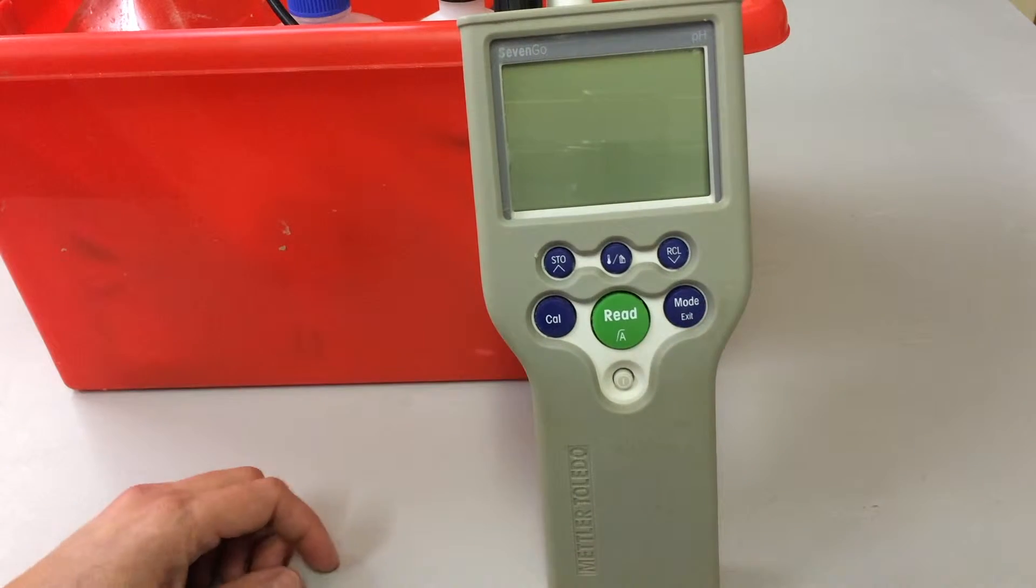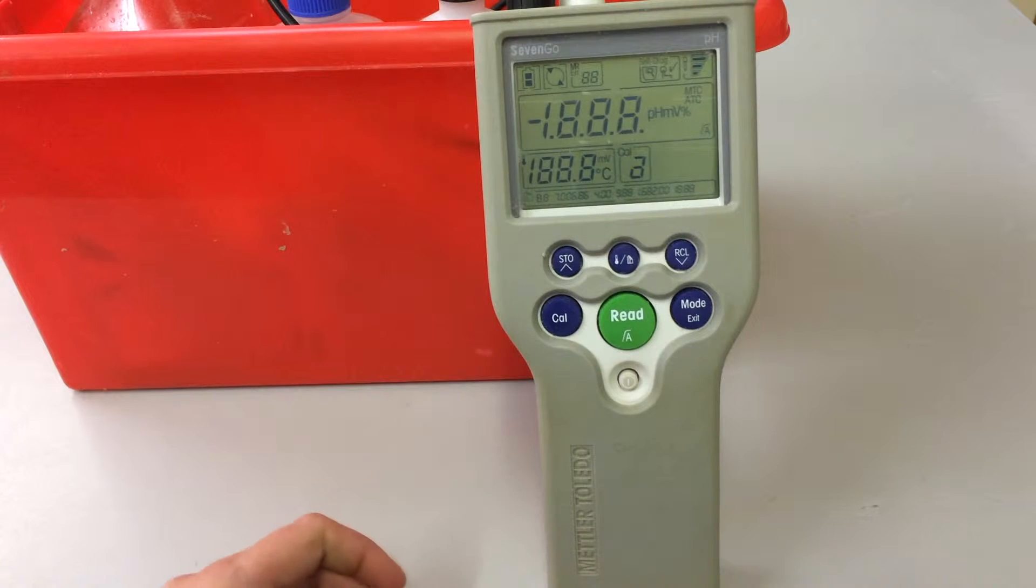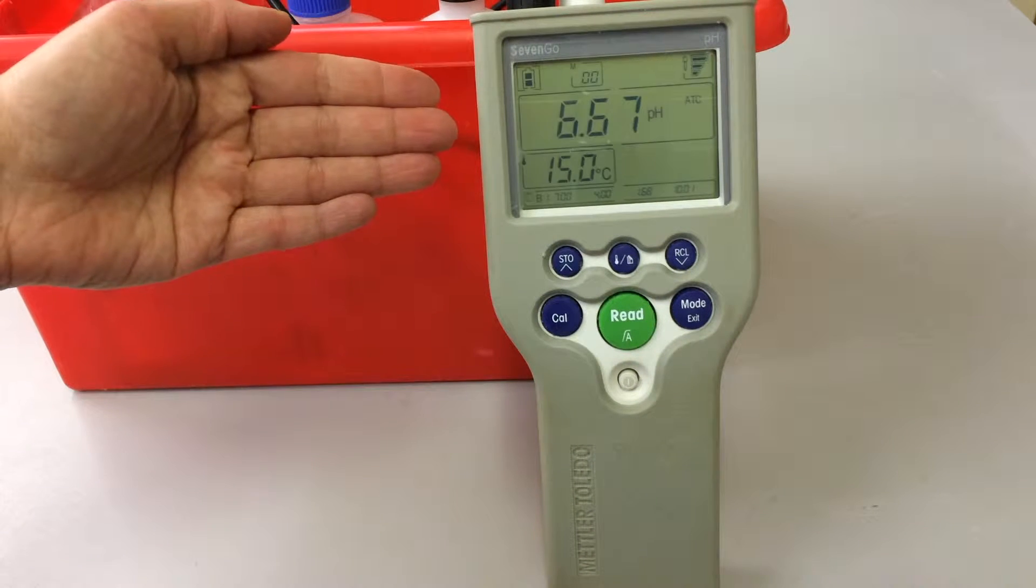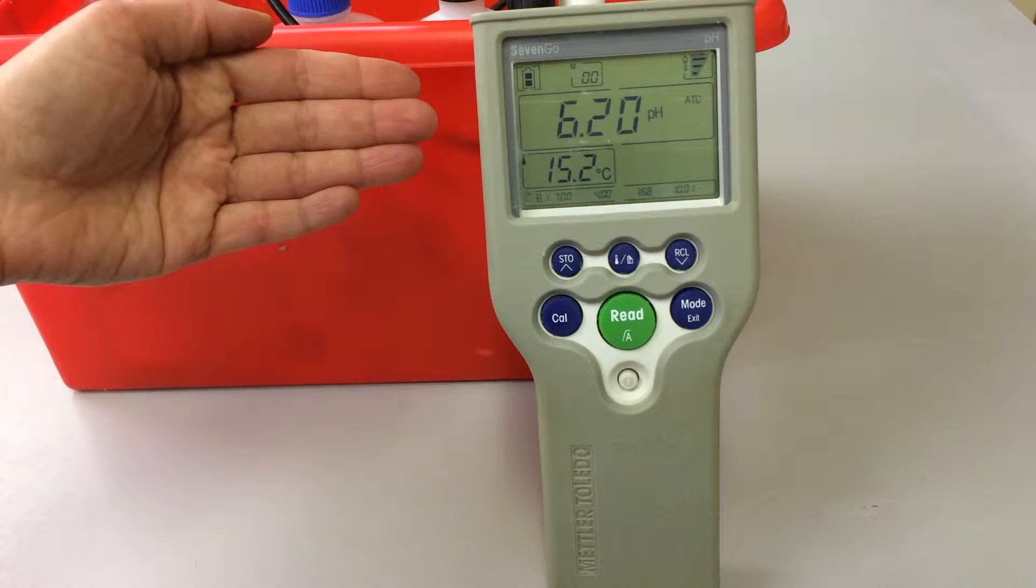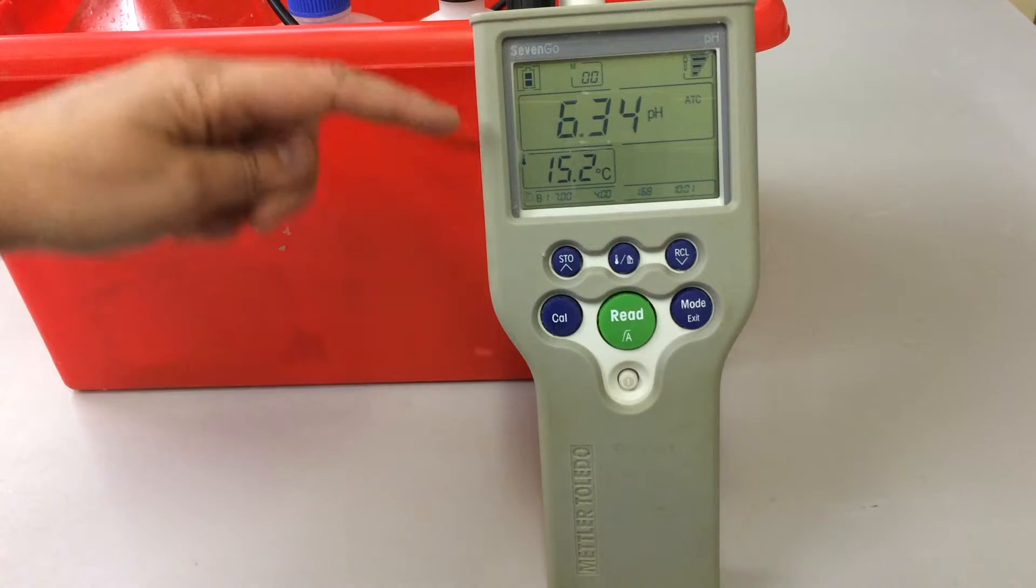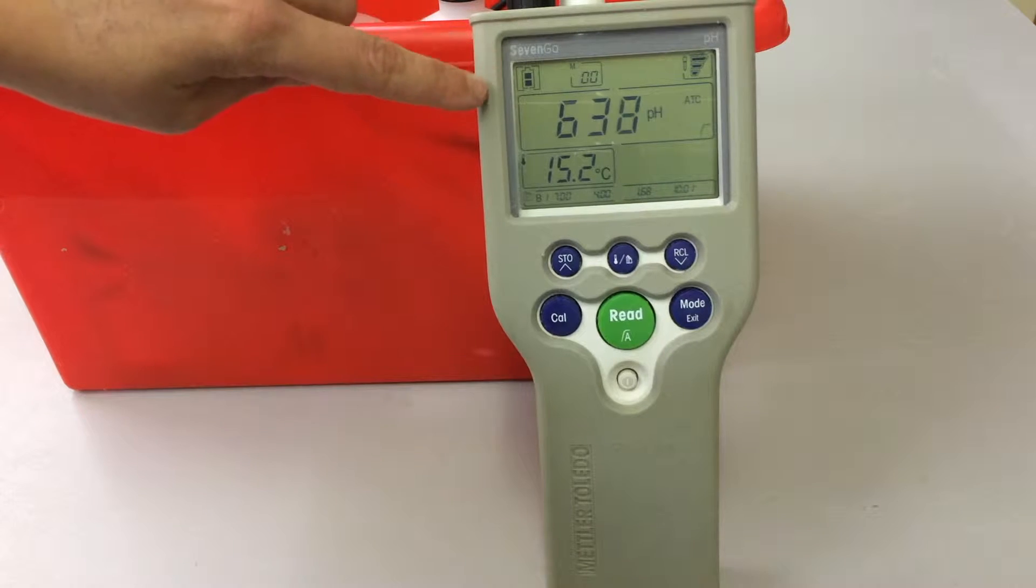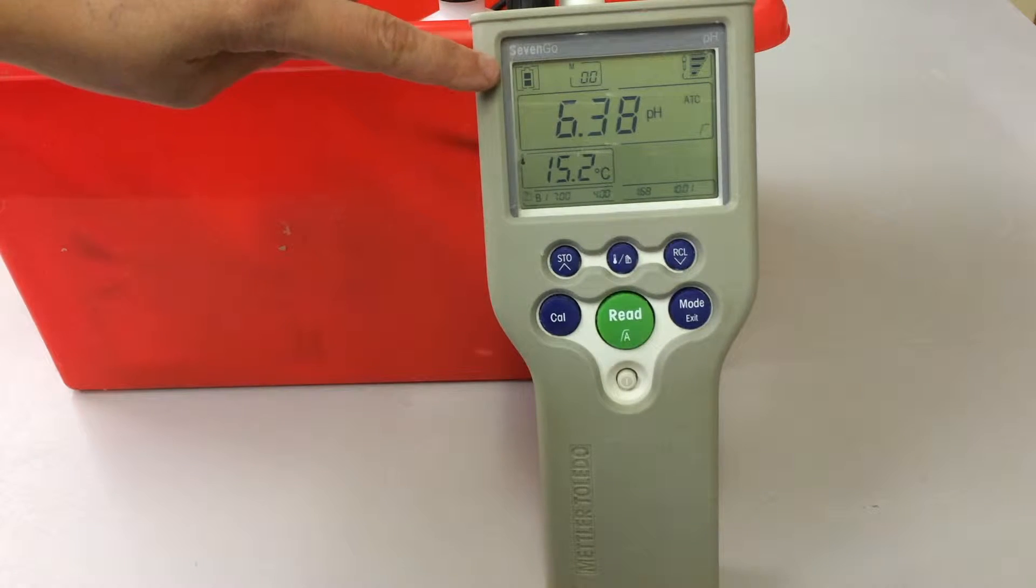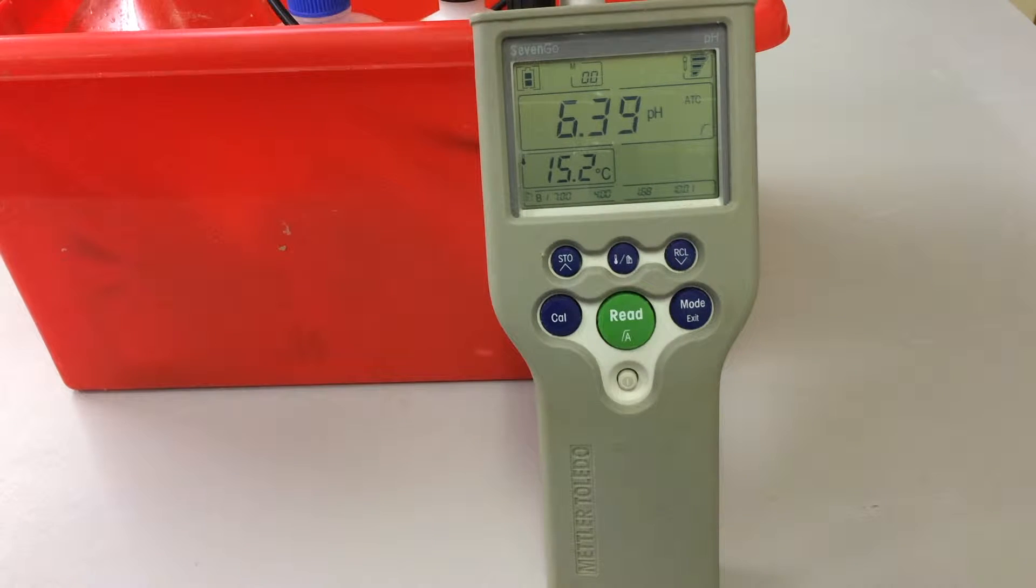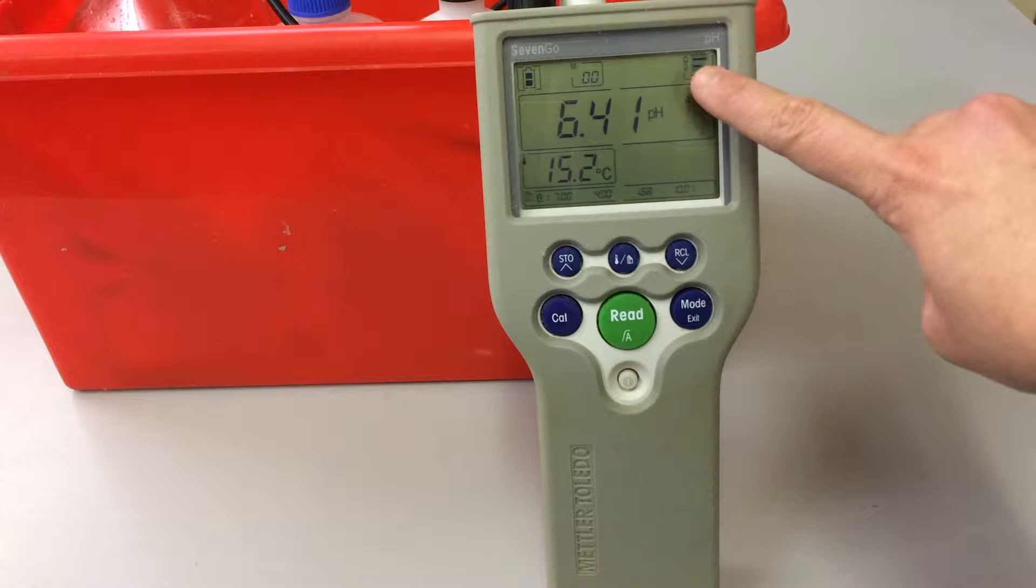To switch the piece of kit on, you press this white button here and then you'll see that the display starts booting up and we get various items on display here. On the top left hand corner we have the battery life. We've got two dark bars there indicating that there's a very full battery in there.